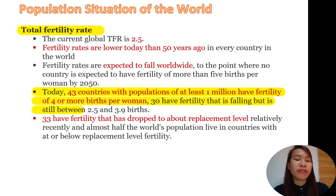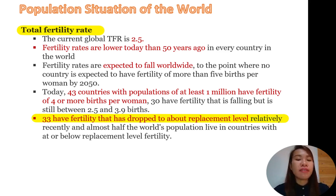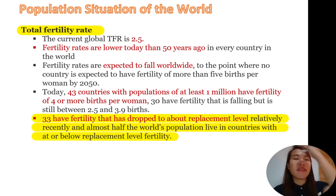While on the other hand, 30 countries have a fertility rate that is falling but it is still between 2.5 to 3.9 births. And 33 countries have fertility that has dropped to about their replacement level — meaning some countries now have births roughly replacing deaths. Almost half of the world's population lives in countries at or below replacement level fertility. When the total fertility rate drops below replacement level, the concern is that the population of those countries may eventually decline.